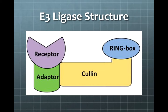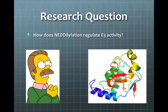A RING subunit binds to the Cullin C-terminal domain, where it recruits and activates E2 ubiquitin conjugates for direct ubiquitin transfer to lysine residues. This process is regulated by NEDD8, which is a ubiquitin-like protein that shares nearly 60% identity with ubiquitin. The research question we will be reviewing today is: how does NEDDylation regulate E3 activity?